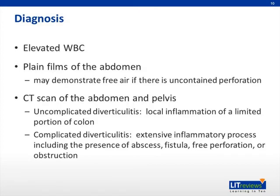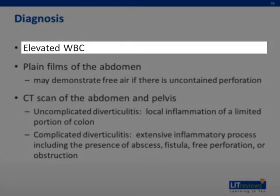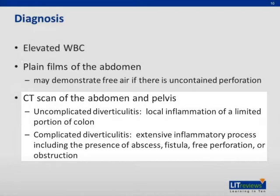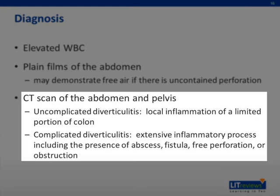The diagnosis of acute diverticulitis is established by a combination of laboratory tests and imaging studies. Typically, patients demonstrate an elevated white blood cell count. Plain film images of the abdomen may demonstrate free intraperitoneal air if frank perforation has occurred. The imaging study of choice, however, is a CT scan of the abdomen and pelvis with oral and IV contrast. This may demonstrate findings of either complicated or uncomplicated diverticulitis.